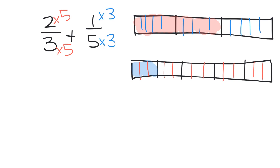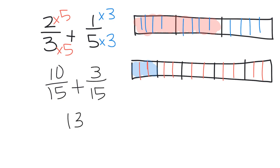We end up with ten-fifteenths plus three-fifteenths, which gives us thirteen-fifteenths. And now you can really see right there the standard algorithm. Parents and teachers, eventually we're going to no longer need to draw the pictorial representation because we can just go straight to that standard algorithm.